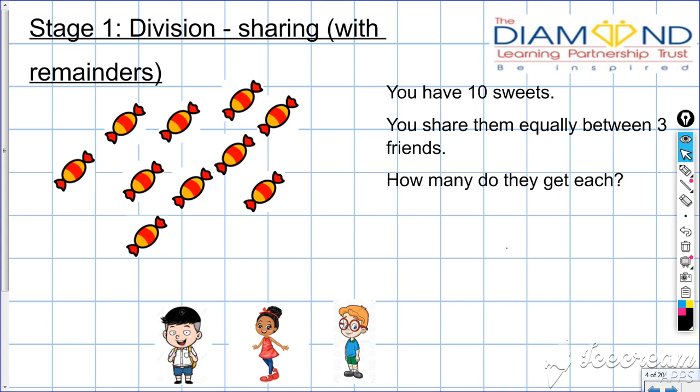Okay, this is division at stage one but with remainders. That's really important because a lot of the time in the real world, things don't share exactly. So we need to make sure we have examples where things don't share exactly.